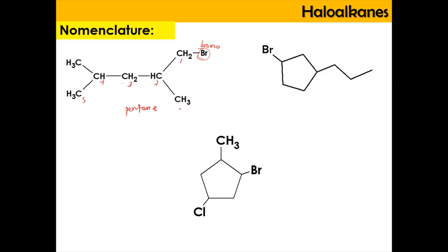The substituents are a methyl group at carbon 2 and a methyl group at carbon 4, giving us 2,4-dimethyl. Combined with bromo at carbon 1, the full IUPAC name is 1-bromo-2,4-dimethylpentane.